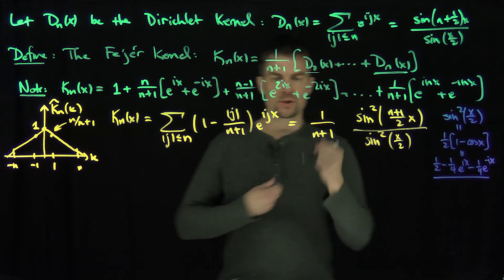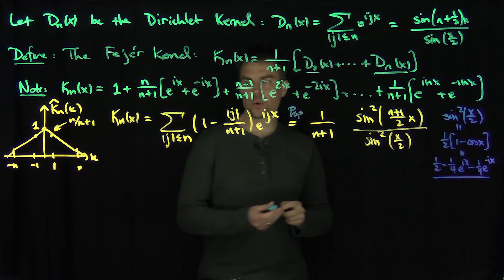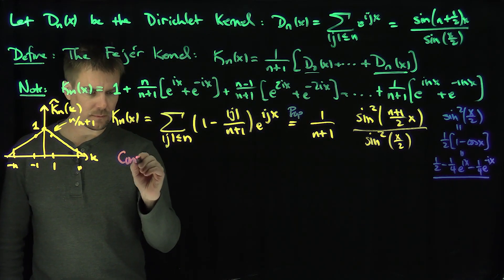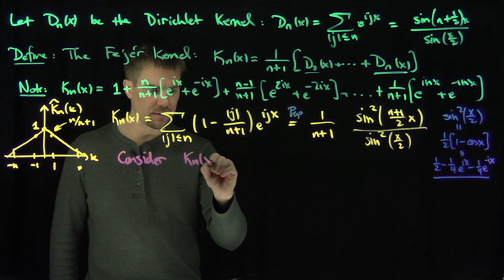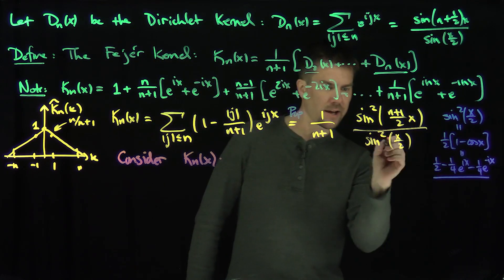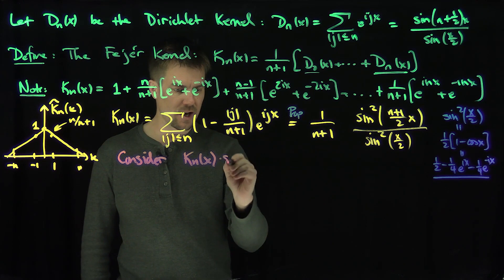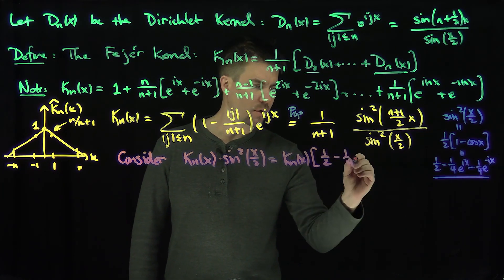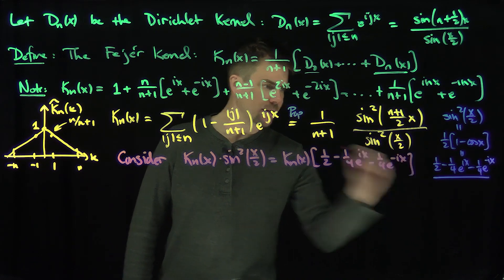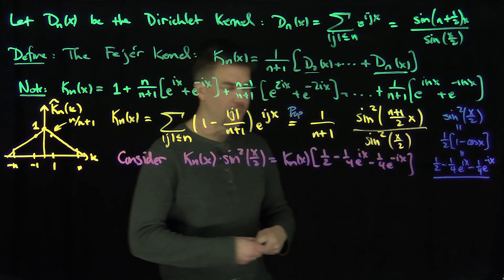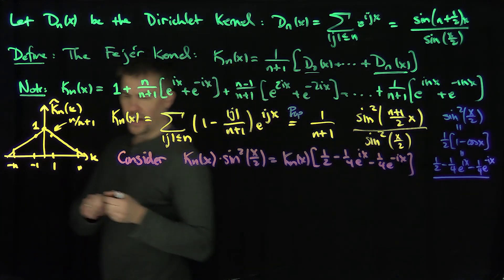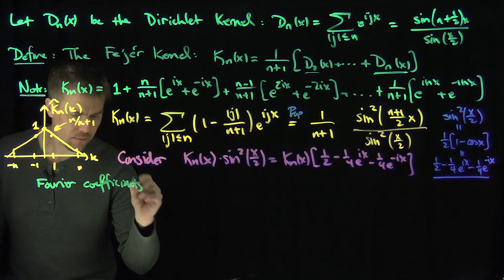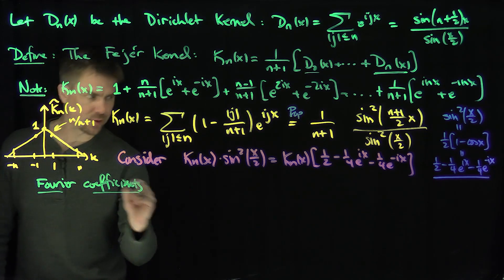To prove this formula, I'm going to keep track of all the Fourier modes. Consider kN of x times sine squared of (x/2), which equals kN of x times (1/2 minus 1/4 e to the ix minus 1/4 e to the minus ix). If we consider this expression and look at the modes, we can write down the Fourier coefficients.